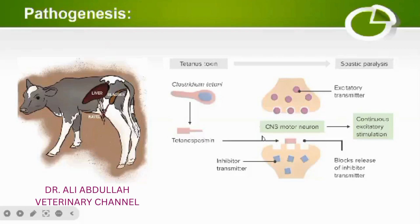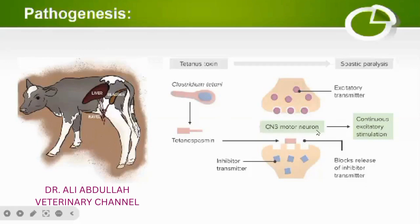When tetanospasmin reaches the spinal cord, it binds at the level of the synapse — the junction between two neurons — and inhibits the release or action of inhibitory transmitters. When inhibitory transmitters are blocked, the muscles are unable to relax and remain contracted. This continuous contraction causes spastic paralysis in the animal. This is the brief pathogenesis of tetanus.